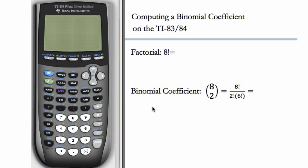Before we compute the binomial coefficient, let's do a factorial first, for example, 8 factorial. To do this, we first enter the number we want a factorial of, which is 8, then go to MATH, PRB for probability, choose the factorial option, and hit enter.